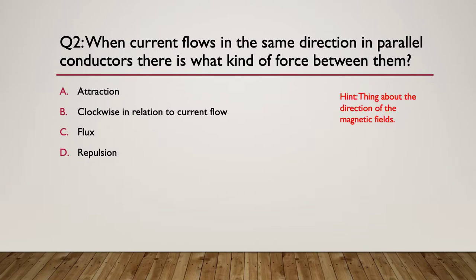So here's your hint. Think about the direction of the magnetic fields. So what's going to happen? So the answer is attraction. Because they're all going in the same direction, we're going to get, the fields are going to want to interlock, interlace with each other. So they're going to be attracted to each other. So if we've got parallel conductors, currents flowing in the same direction, we're going to create magnetic fields that want to combine, therefore attraction.